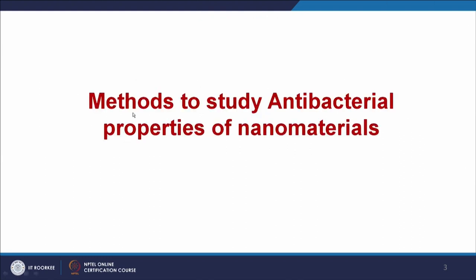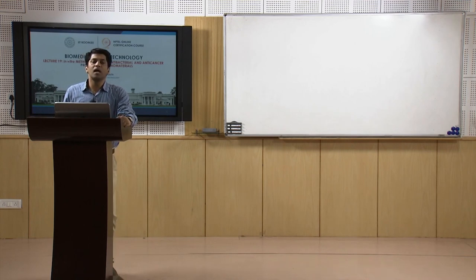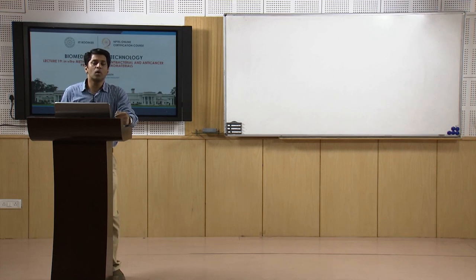First, we will study about what are the various methods available to study the antibacterial properties of nanomaterials. The first experiment is turbidity assay. In this, we are going to visually monitor the turbidity of the bacterial growth. Whenever you make nanoparticles, the first thing is you have to select the suitable bacteria to study the antibacterial efficiency. The ideal choice should be one gram positive bacteria and one gram negative bacteria.